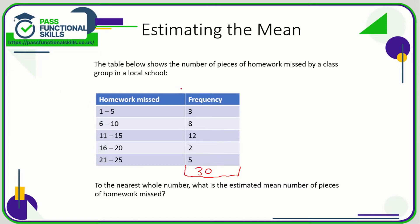So the mean number of bits of homework missed is going to be the total items of homework missed divided by the number of students, which is 30. What we need to do now is work out an estimate for the total number of pieces of homework missed. We know that three people missed between one and five bits of homework. These three people, we don't know if they missed one, two, three, four or five bits of homework. So what we're going to do is assume that they all missed the halfway point of one to five. Halfway between one to five is three.